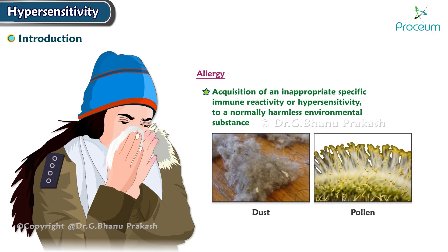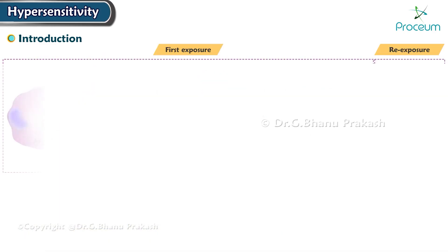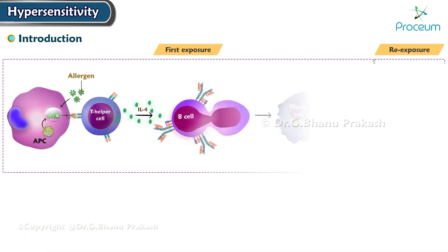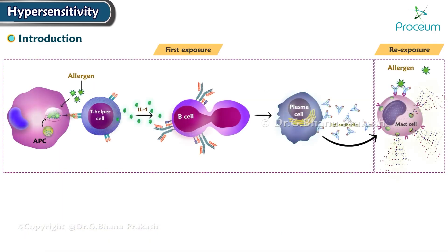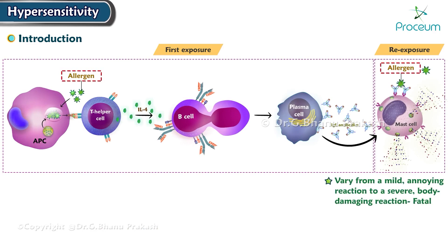The offending agent is known as an allergen. Subsequent re-exposure of a sensitized individual to the same allergen elicits an immune attack, which may vary from a mild annoying reaction to a severe body-damaging reaction that may even be fatal.